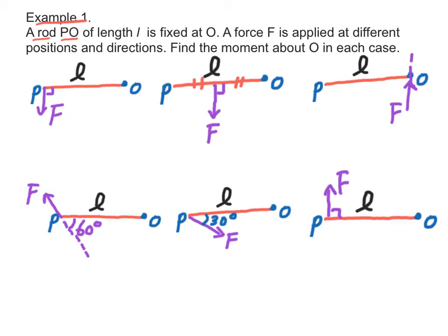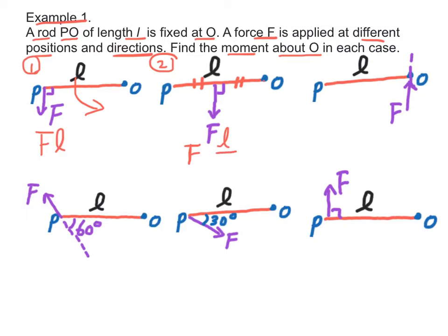Example 1. A rod PO of length L is fixed at O. A force F is applied at different positions and directions as shown in the following diagrams. Find the moment of the force about O in each case. For case 1, the moment of the force about O is FL, which is anticlockwise moment. For case 2, the moment of the force about O is equal to F times L over 2, which is also anticlockwise moment. For case 3, the moment of the force F about point O is zero because the force passes through point O.